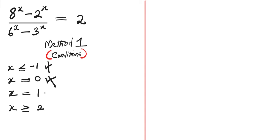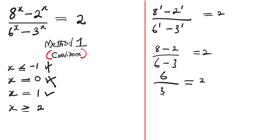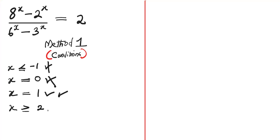Next, let's consider when x equals 1. We have 8 to the power of 1 minus 2 to the power of 1, divided by 6 to the power of 1 minus 3 to the power of 1, which should equal 2. That gives (8 - 2)/(6 - 3) = 6/3 = 2. Since 2 equals 2, this is correct — x = 1 is one of the solutions.